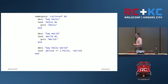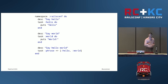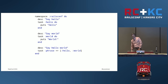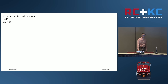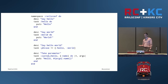We have a third task that has some dependencies and no block of its own because it doesn't need to do anything additional. So when you run this 'phrase' task, it's first going to run the hello task, then the world task, and if it had a body it would run whatever was in that block. We run `rake railsconf:phrase` — it runs the hello task, puts 'hello', runs the world task, puts 'world'.